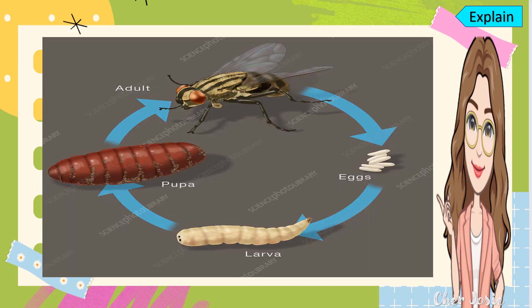Lastly, we have the example of a fly or housefly. It follows the same four stages: eggs, larvae, pupa, and adult.